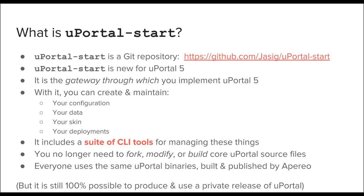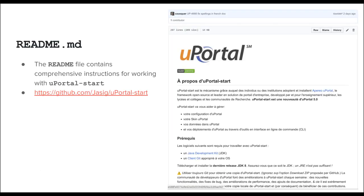With uPortal 5 and uPortal Start, you no longer need to fork, modify, or build the core uPortal source code. Everyone who adopts uPortal 5 has the opportunity to use the same uPortal binaries built and published by the community. It is still 100% possible to produce and use private releases or private builds of uPortal if you want. Information on using uPortal Start is available in a comprehensive README, and the README for uPortal Start is even available in French.